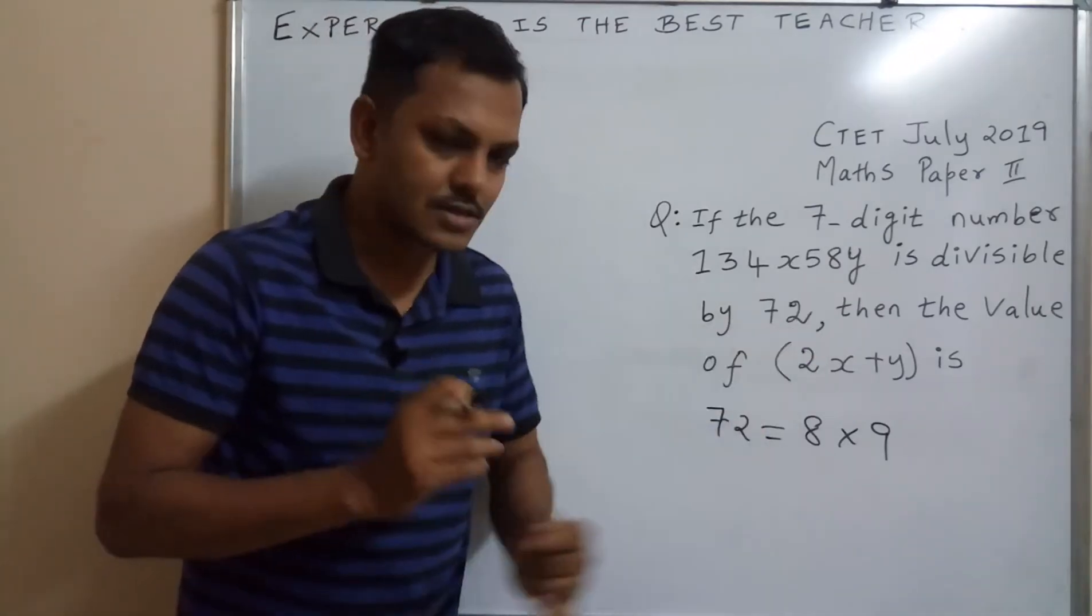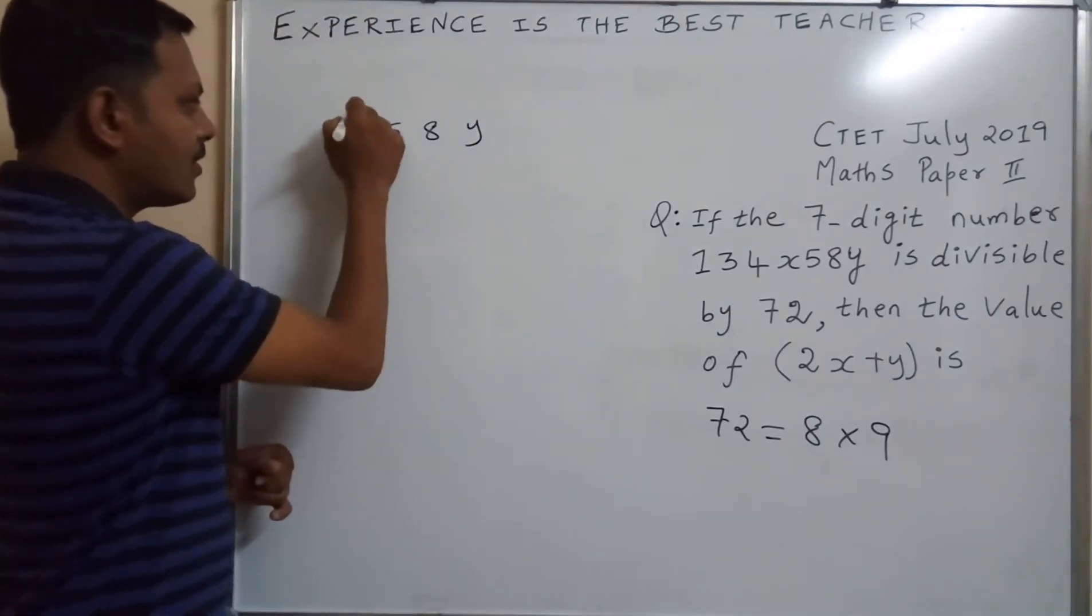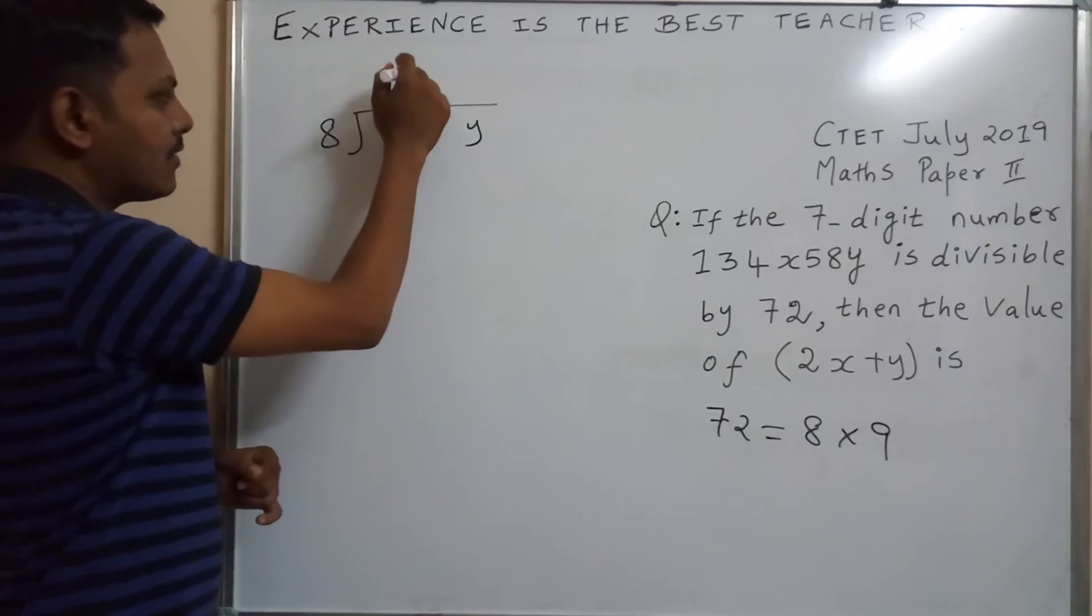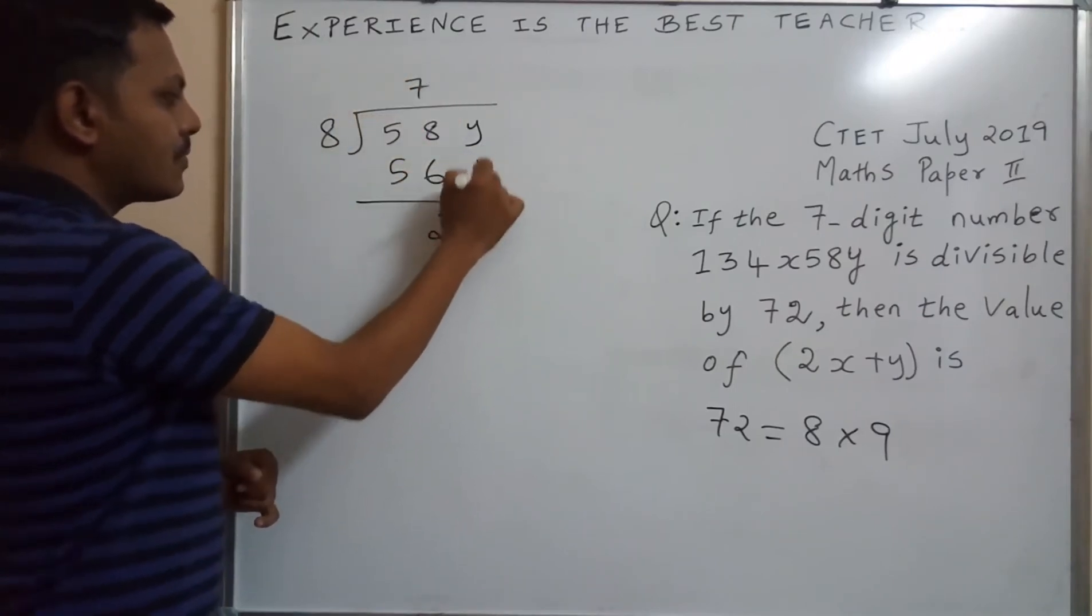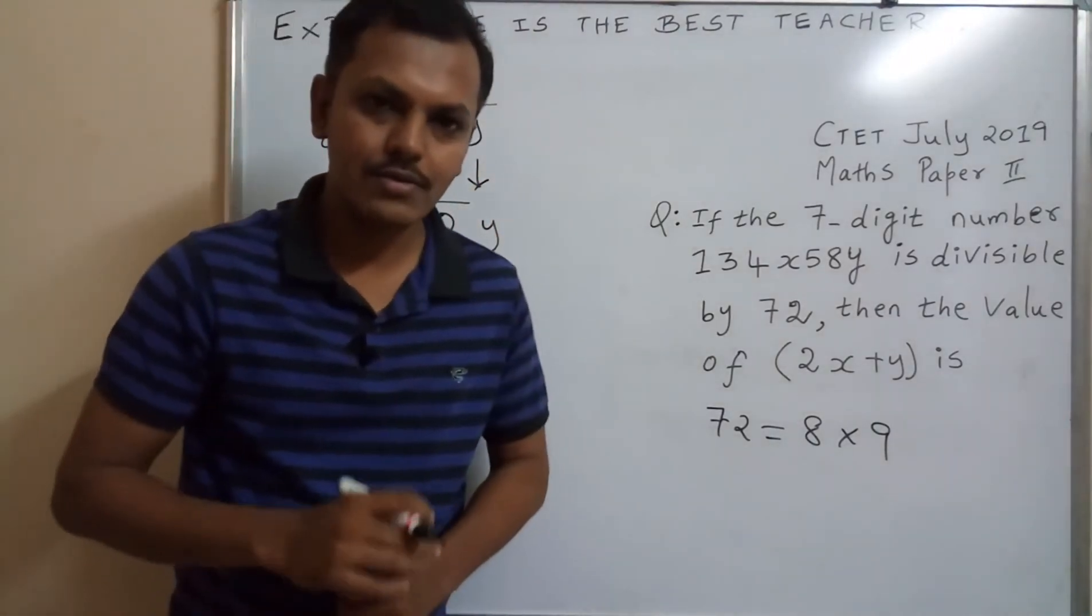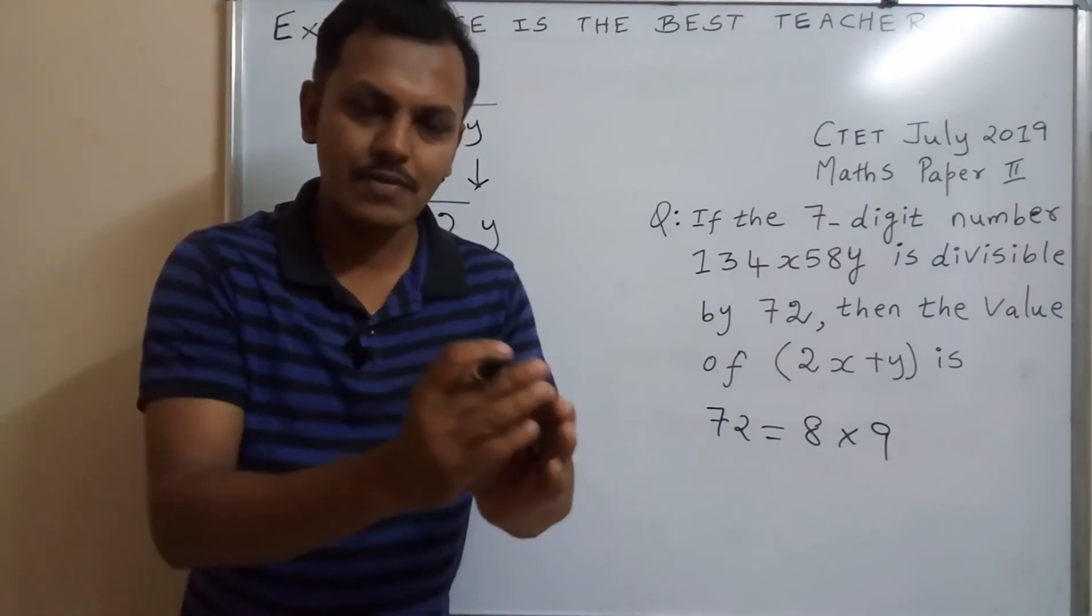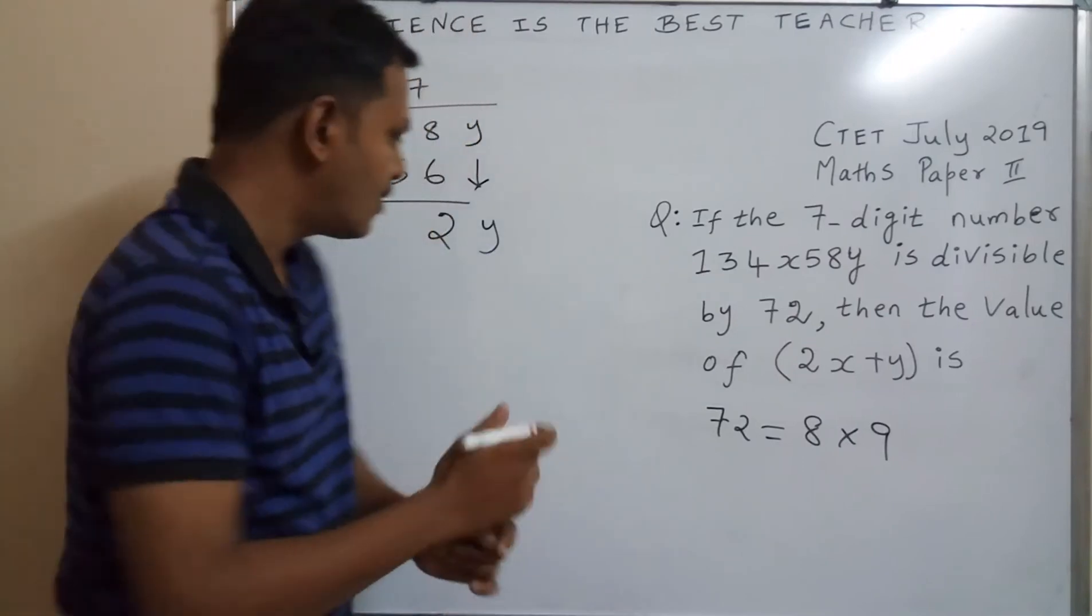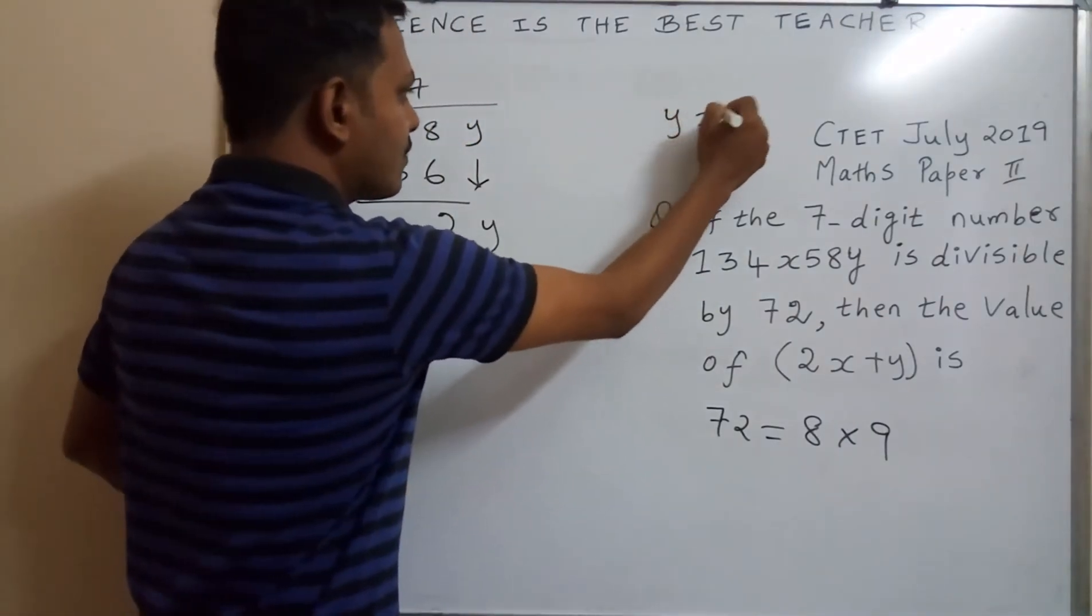So we will check this last 3-digit is divisible by 8. Then we will find the y value, divided by 8. We will find like 7 times 8, 7 eights are 56, balance is 2. Bring down this y, only one possibility for y to get remainder 0 is 4. 3 eights are 24, between 20 and 29, in 8-table we'll get 24, y will be 4. We can write here, y equal to 4.